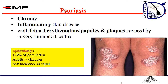Psoriasis is a chronic, inflammatory skin disease, and it is not infectious. It is characterized by well-defined erythematous papules and plaques, usually on the extensor areas, though there are different forms. Psoriasis is a common skin condition affecting about 1 to 3% of the population. The disease is usually seen more in adults, but some forms are present in children. It is distributed equally between males and females.